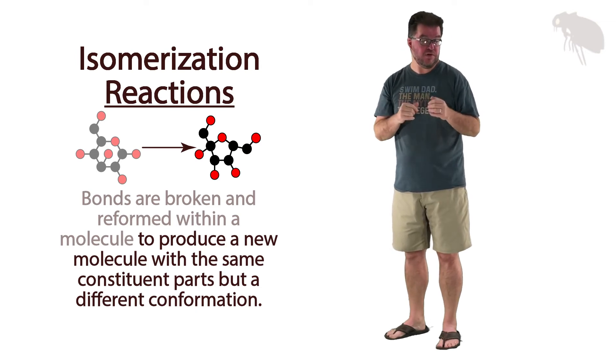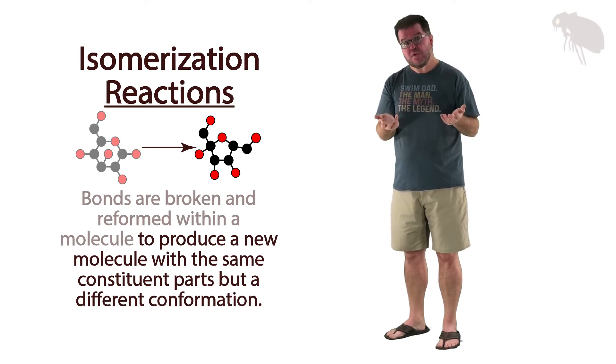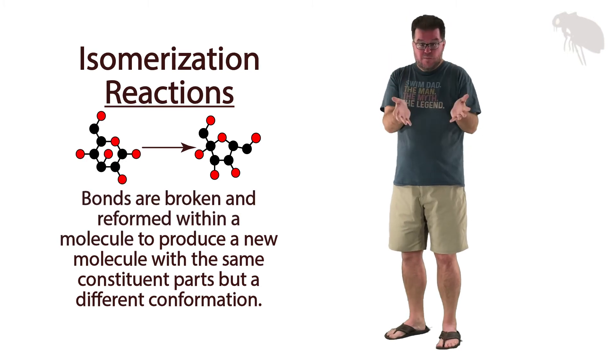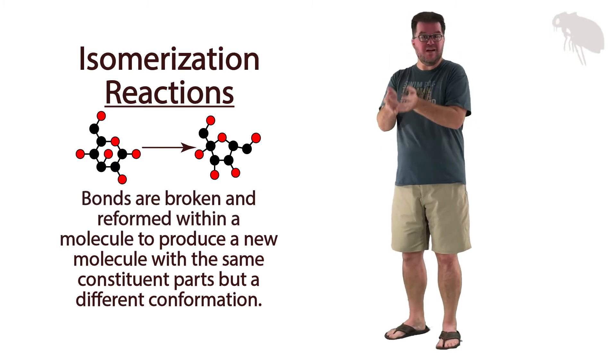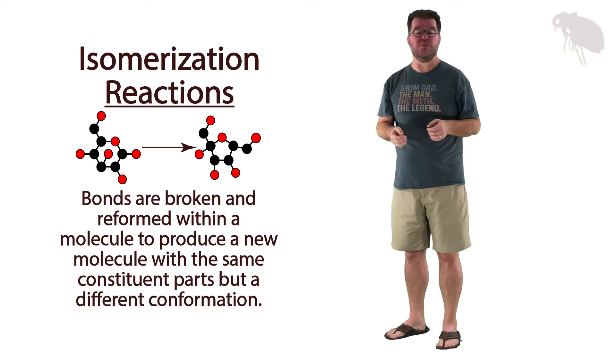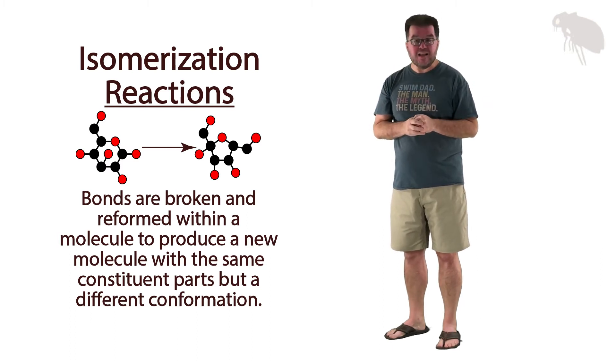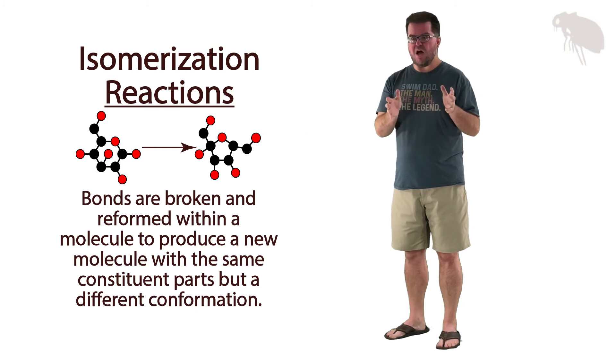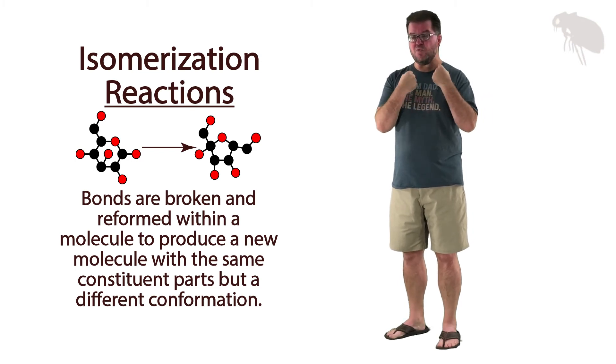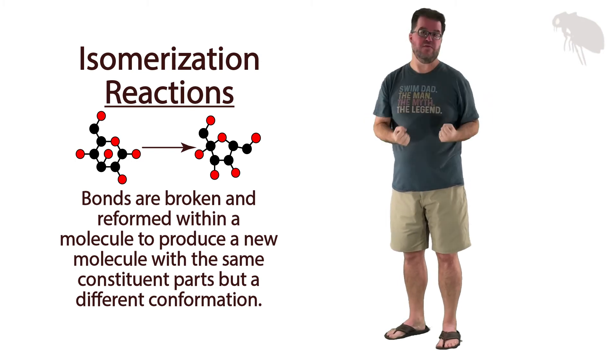I actually have a couple videos on isomers that you might want to look at if you're not familiar with isomers already. Isomerization reactions form isomers. They rearrange bonds within a molecule. This is particularly important in metabolic activity in cells. A lot of cellular metabolism includes isomerization reactions to rearrange bonds to get substances in the right format to draw energy out of them.